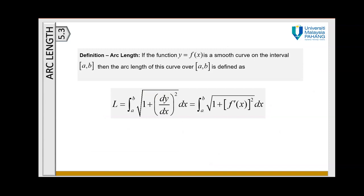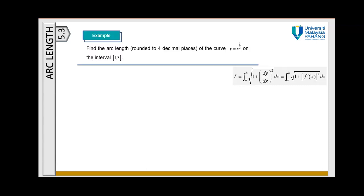In simple terms: if the function y = f(x) is a smooth curve on the interval [a, b], then the arc length of this curve over [a, b] is defined by this formula. The arc length L equals the integral from a to b of the square root of 1 plus [f′(x)]² with respect to dx. Now let's look at an example: find the arc length, rounded to four decimal places, of the curve y = x^(3/2) on the interval [1, 3].